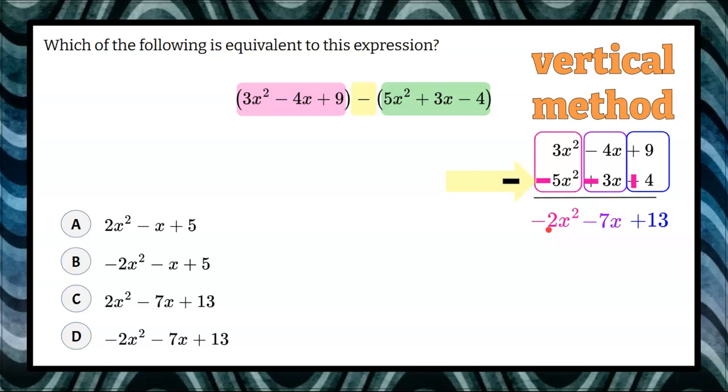So there we had the same answer, negative 2x² subtract 7x add 13, answer choice D.